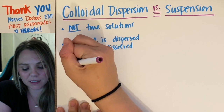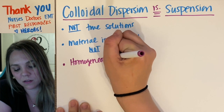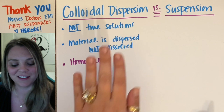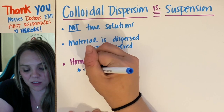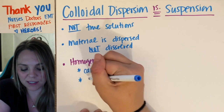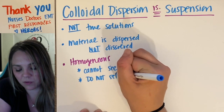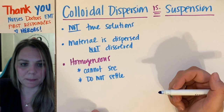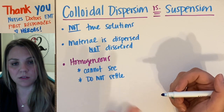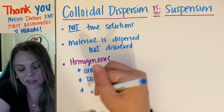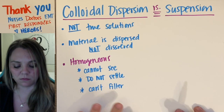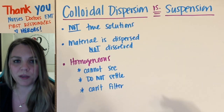A colloidal dispersion is, in fact, homogenous. However, the particles are small enough that you cannot see them with your naked eye. They do not settle with gravity — so they won't settle out like muddy water would. And it can't be filtered — those particles are not big enough to filter, but they're too big to be a solution. This is kind of the weirdo in-between guy.